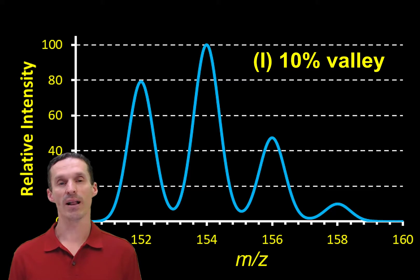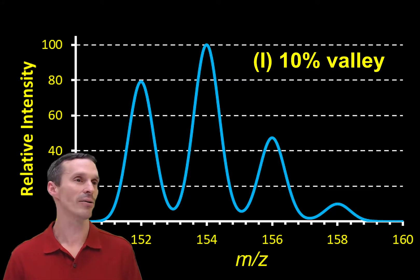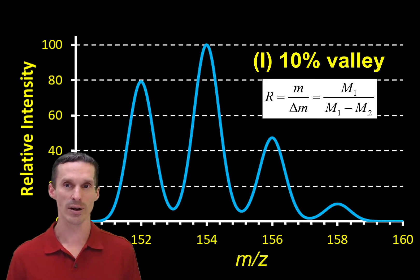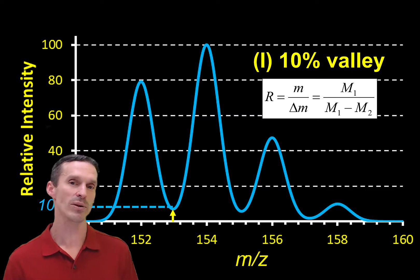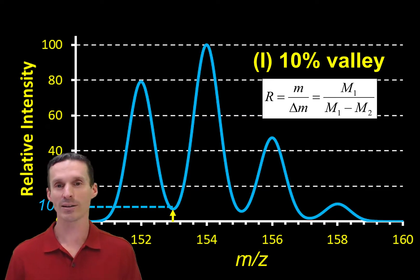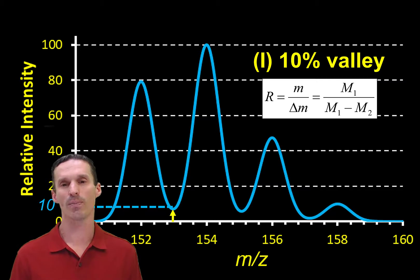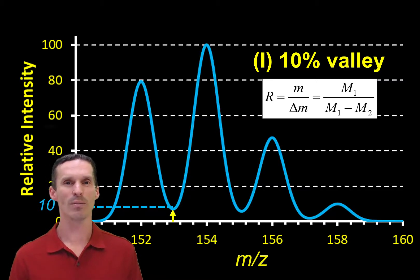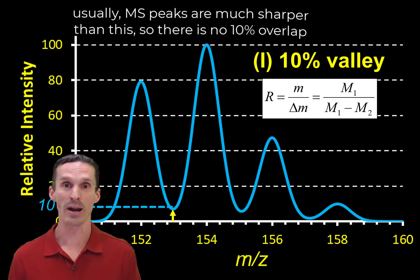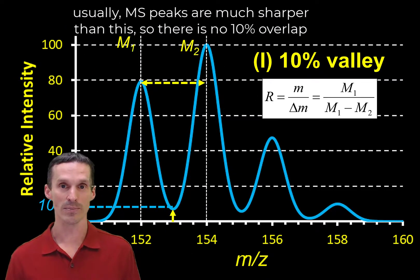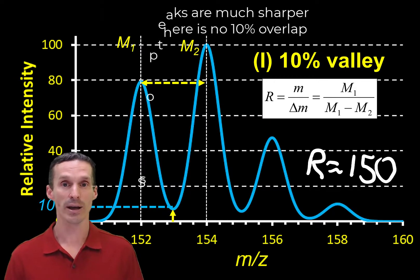The first one is the 10% valley definition. I'll be honest — I don't even like this definition. Very few people use this term when quantifying resolution. The situation depends on having overlap between two adjacent peaks, and technically the two peaks should be separated by one mass unit, though here they're separated by two, so this doesn't really apply. What you would need to do is find the case where they exactly line up at 10% — good luck with that — and then run it through the equation.